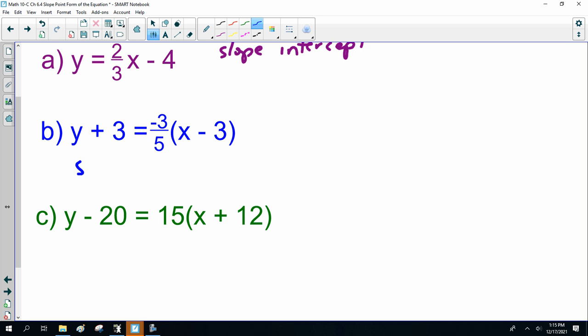This is slope point form, because m is minus 3/5, and it goes through the point 3 comma minus 3. Now, that's really easy to graph on graphing paper, but the graphing calculator is a pain in the bum. Now, to turn it into proper slope-intercept, you multiply it out.